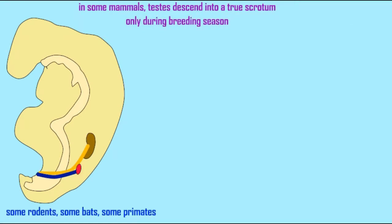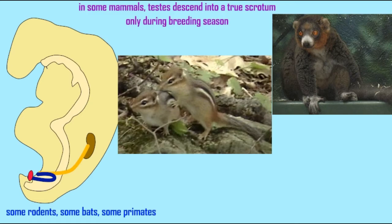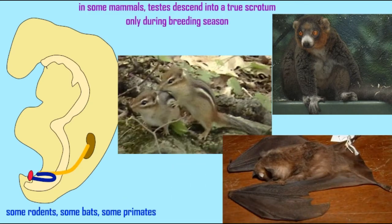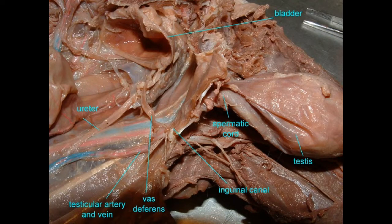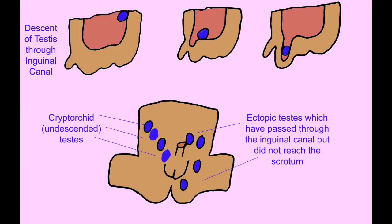In some mammals — including some rodents, some bats, and some primates — the testes can descend into a true scrotum but only during breeding season. In most marsupials and in most placental mammals, the testes descend into a true scrotum; this includes humans. In infant males, if the testes do not fully descend into the scrotum, this may result in the testes not being able to produce viable sperm, and should be corrected as soon as possible.